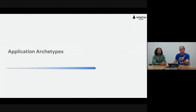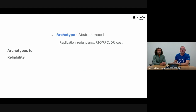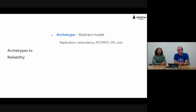The way we do it is through something we call archetypes — this is going to help you think through it. What is an archetype? It's really just an abstract model, specifically through a reliability lens. We want to think about what types of replication we're going to use, at what rates and in what places, what level of redundancy we care about in storage, what our RTO and RPO are, what our DR scenario looks like, how we're going to handle failure, and of course cost as well.